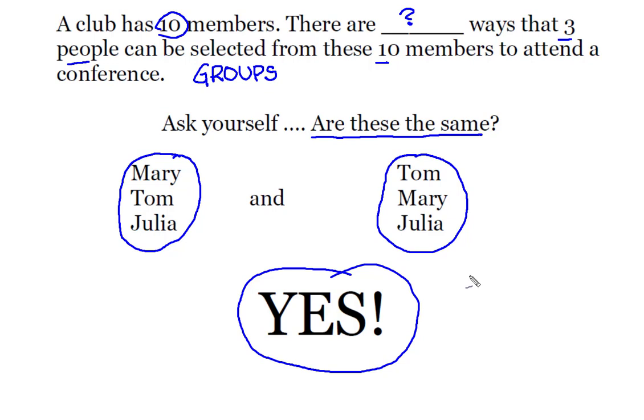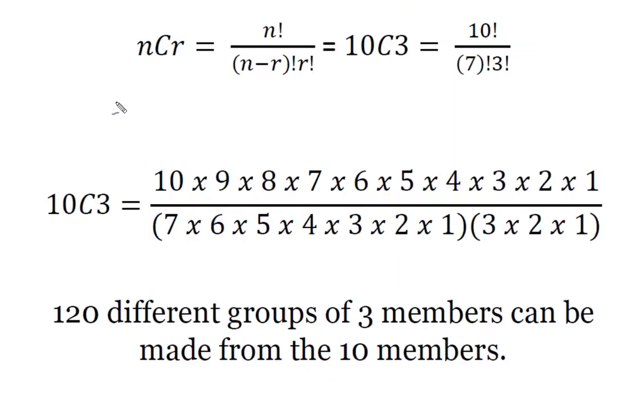It's the same people going. It's the same group of three going. And none of them have a quote-unquote position. In that case, I know that out of my n objects, I chose or combined them into smaller groups of my required number of three.